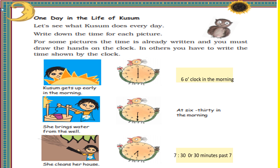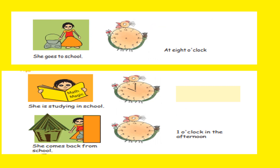In the third picture she is cleaning her house and the time shown is 7:30, or 30 minutes past 7. She goes to school and the time given is 8 o'clock, so the hour hand should point at 8 and the minute hand should point at 12.